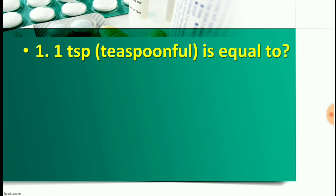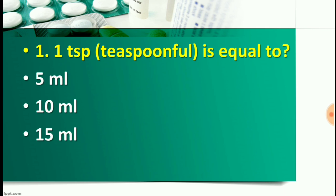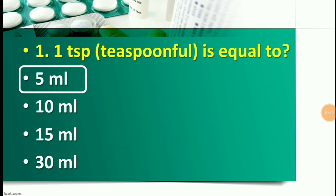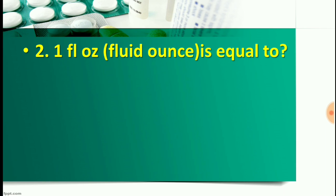Question number one: One teaspoonful (1 tsp) is equal to — Option A: 5 ml, Option B: 10 ml, Option C: 15 ml, or Option D: 30 ml. You may pause the video to think about the right answer. The right answer is Option A — 5 ml. So one teaspoonful is equal to 5 ml. In this video we will mainly solve this kind of conversion.